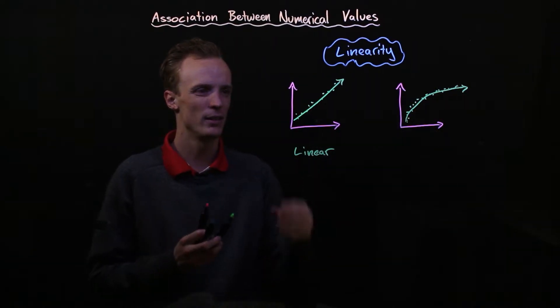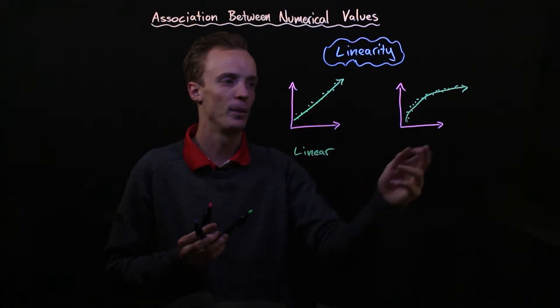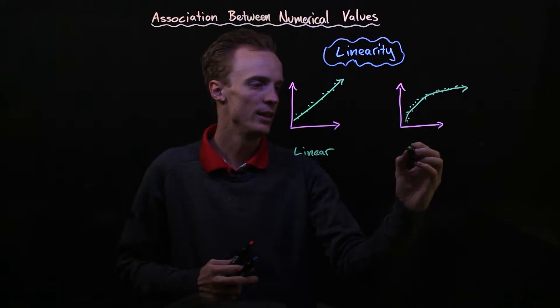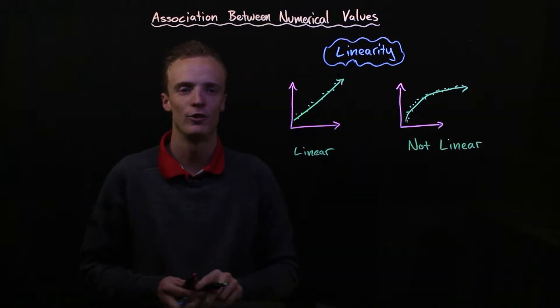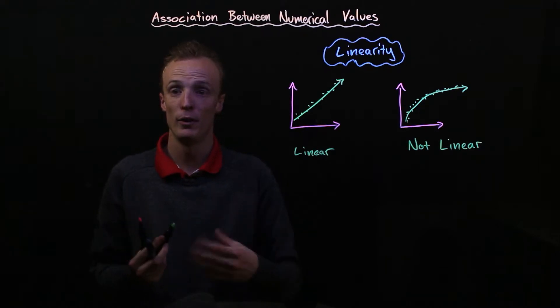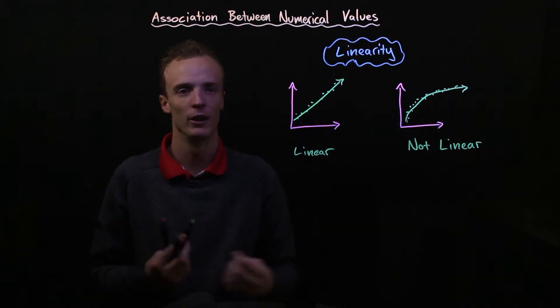Any time that doesn't seem to follow a straight line trend we will say that the correlation between our explanatory and response variables is not a linear relationship. For the purpose of the other two we're going to assume that we've got linear relationships that we're having a look at.